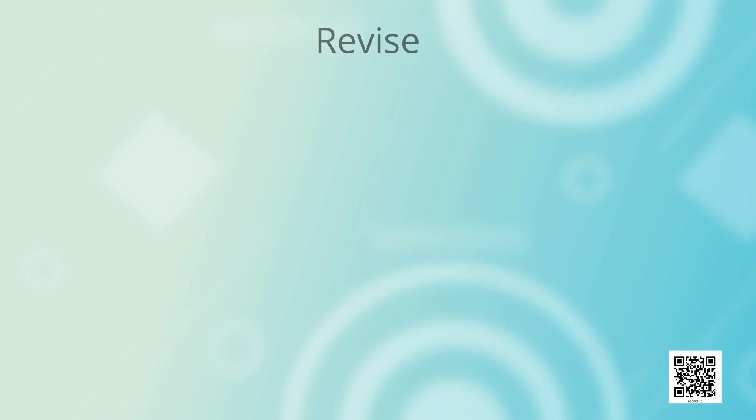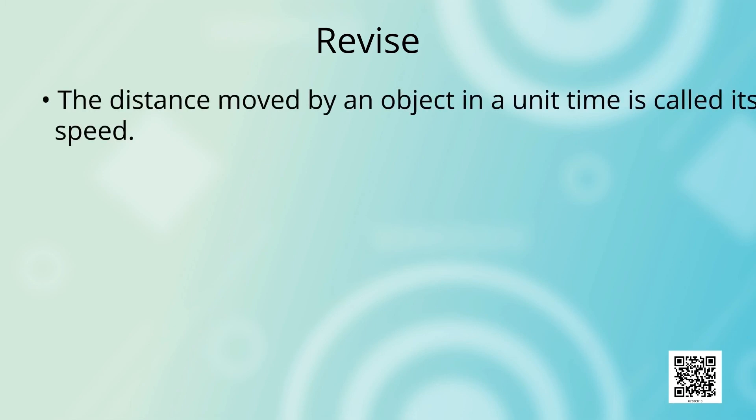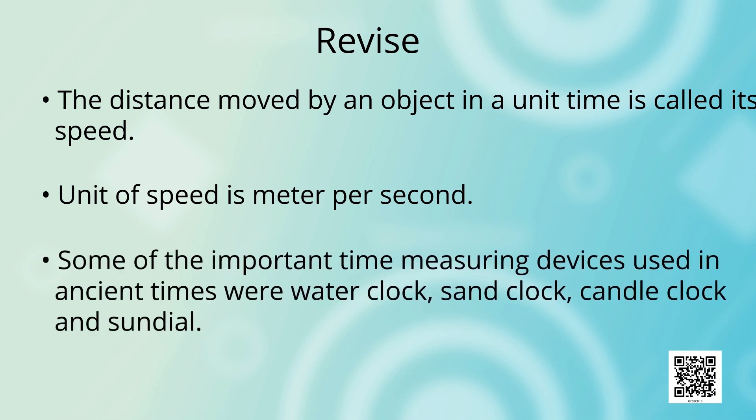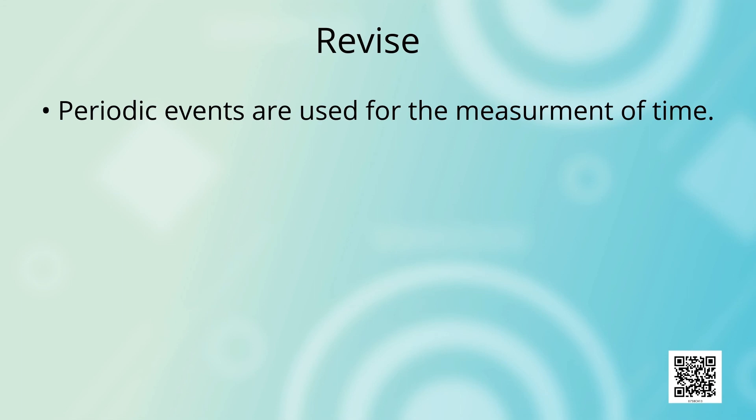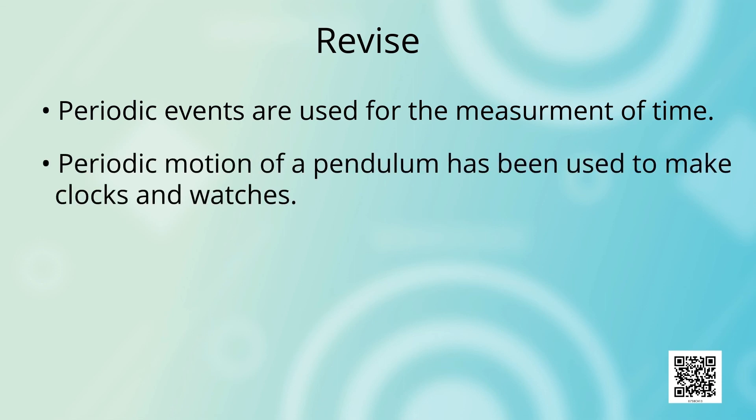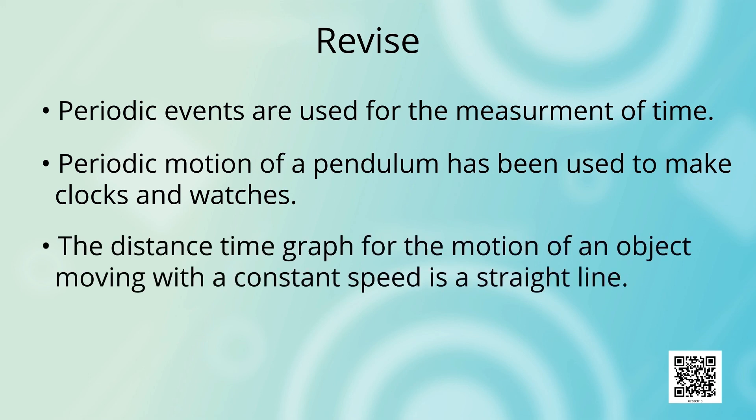Now dear students, let us revise the main points discussed in this chapter. The distance moved by an object in a unit time is called its speed. Unit of speed is meter per second. Some of the important time measuring devices used in ancient times were water clock, sand clock, candle clock, and sundial. Periodic events are used for the measurement of time. Periodic motion of a pendulum has been used to make clocks and watches. The distance-time graph for the motion of an object moving with a constant speed is a straight line.